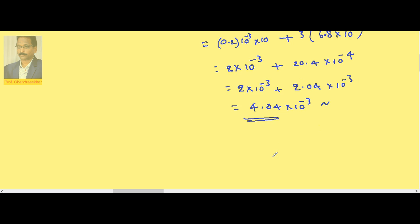Suppose if I take g as 9.8, then mg becomes equal to 0.2 × 10⁻³ × 9.8. This is nothing but 1.96 × 10⁻³. But already, Eq is 2.04 × 10⁻³.